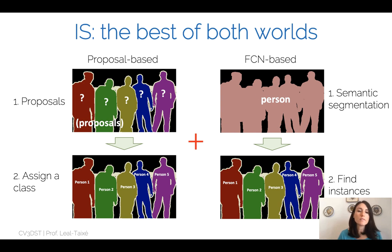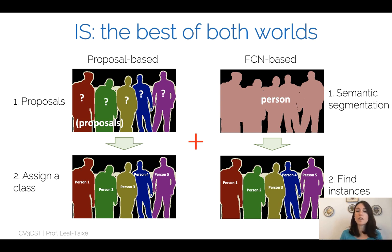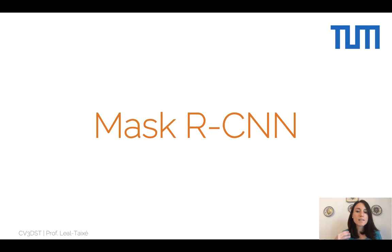One question is: why constrain my method to a fixed set of proposals, which might be incorrect, or why constrain myself to a semantic segmentation map? Ideally, you want to leverage the best of both worlds — the proposals, which give information on instances, and also the semantic maps — without starting from one and deriving the other. This is how we arrive at one of the most famous methods for instance segmentation: Mask R-CNN, which derives from fast and faster R-CNN.